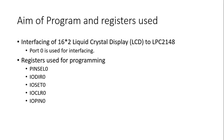Here we are going to use Port 0 for interfacing. The registers used for programming are PINSEL0, that is the pin function select register, which will set the pins as GPIO. Next is IODIR, the input/output direction register which sets the direction of port pins as input or output. IOSET and IOCLEAR are used to set or clear individual bits or groups of bits for Port 0. IOPIN0 is used to set or read data collectively from the pins of Port 0. These five registers will be used for programming.